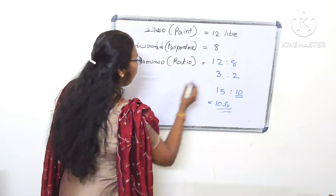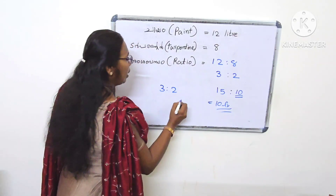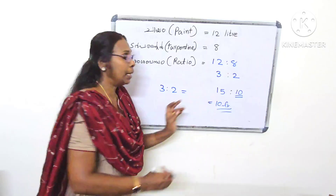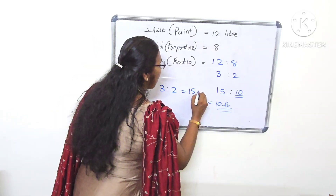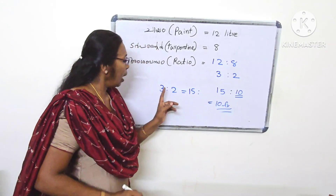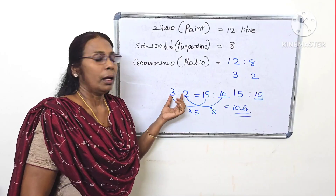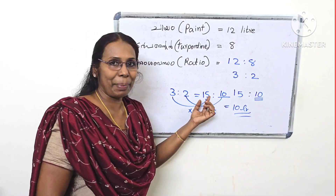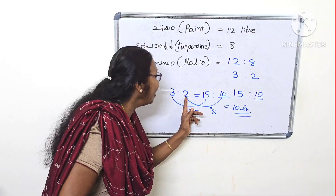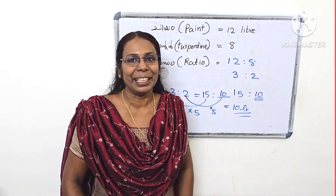This is what we call 3 is to 8. What is the same? 15 is to 8. 15 is to 8. 15 is to 8. That is the same thing.